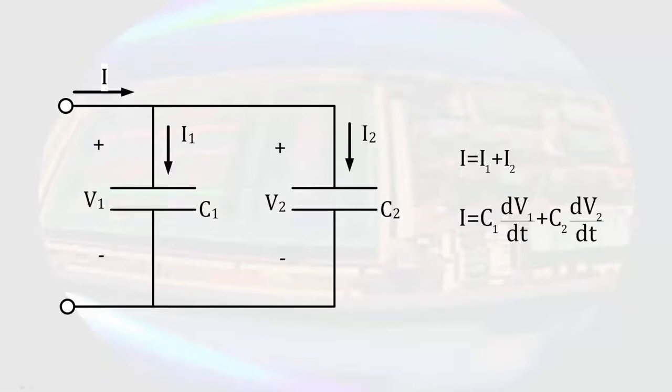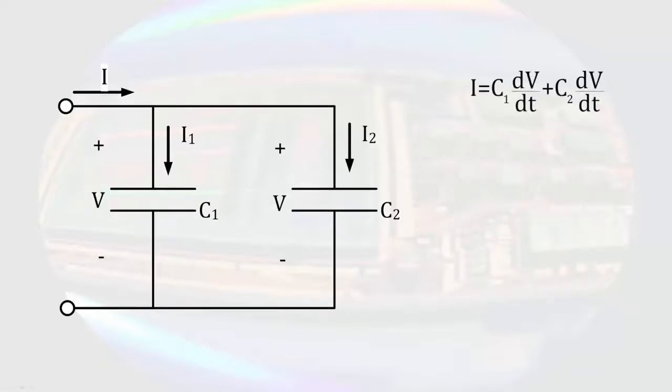We can then substitute the current voltage relationship for a capacitor into the equation. Since the capacitors are in parallel, the voltages V1 and V2 are equal, so we can substitute V in for each of them. We can then factor the derivative out of the equation, showing us the two capacitances add to an equivalent capacitance.